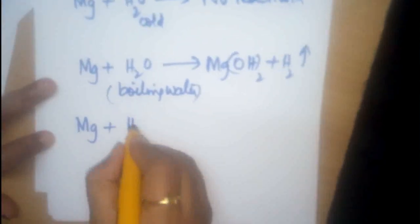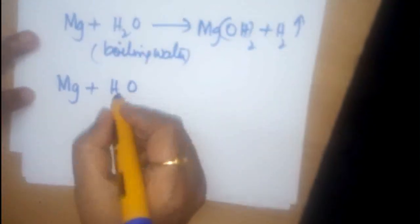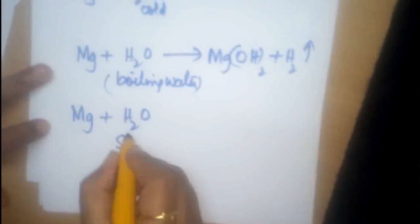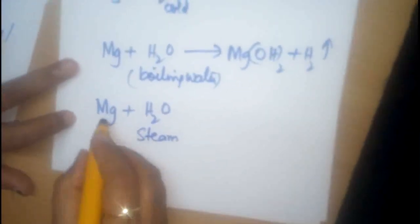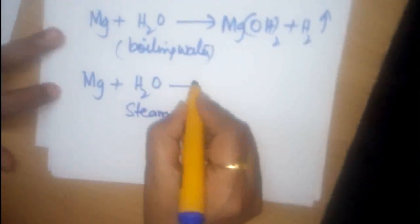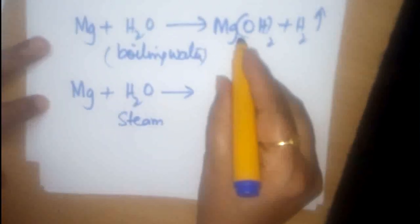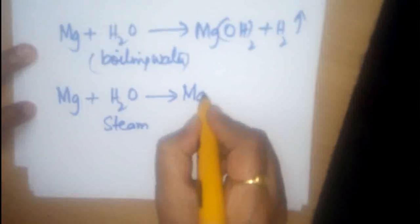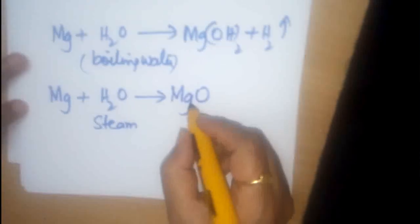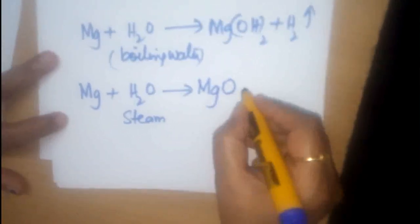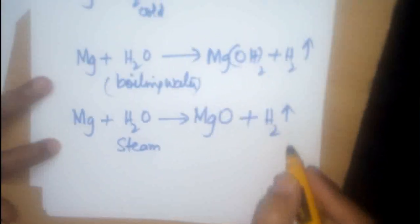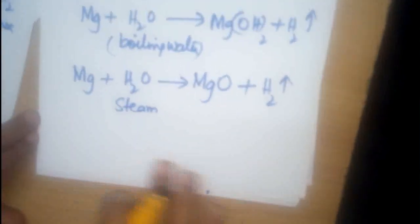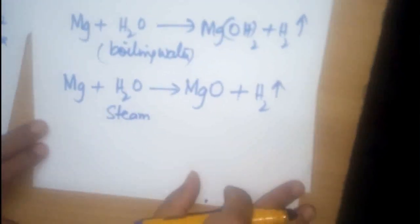So, if the condition of water is now, when the temperature is a little high, it is going to be, the water is going to be in the steam condition. Magnesium reacts with steam. It does not form magnesium hydroxide. But what do we see? We see white powder of magnesium oxide is formed and hydrogen gas is evolved.